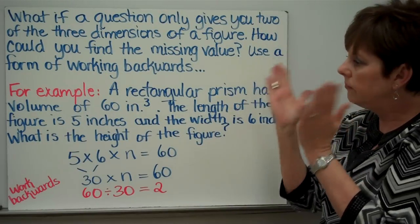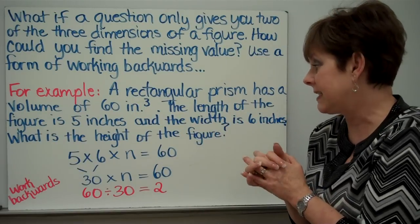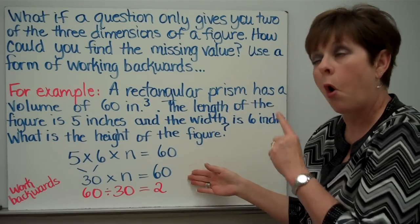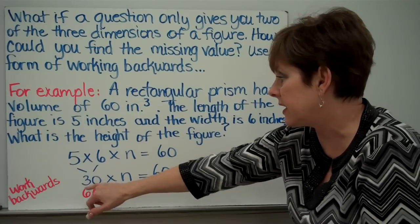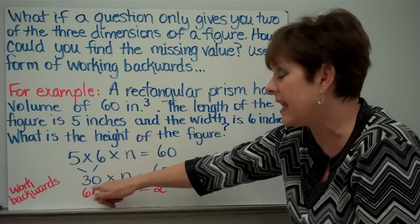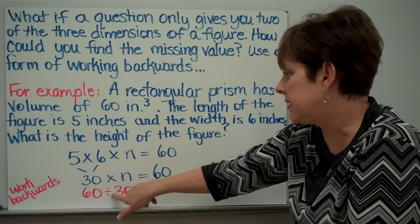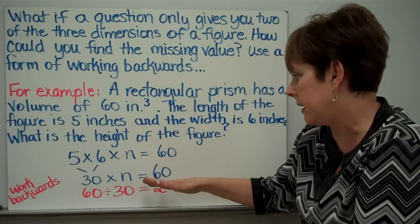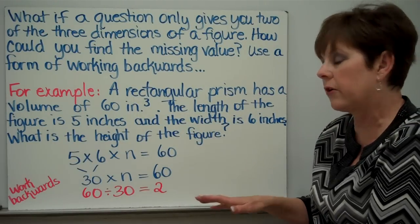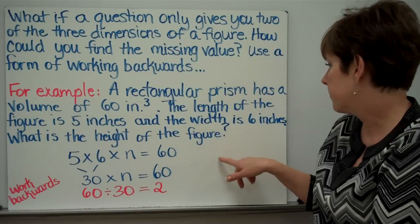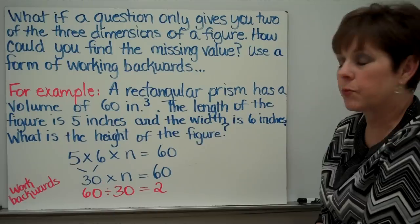Now, you could use your powers of multiplication and say, well, I know that thirty times two is sixty. Or, if you didn't know that, you could work backwards. Take this, put it here. Sixty divided by thirty, because I know what that is. I just don't know what this is. Sixty divided by thirty would be n. And if I did the division, I'd come out with two. So, what's the height of my figure? It's two inches, because we're measuring in inches here. I just work backwards.